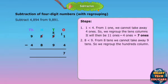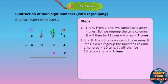8 is less than 9. From 8 tens, we cannot take away 9 tens. So we regroup the hundreds column. 1 hundred is equal to 10 tens. It will then be 18 tens minus 9 tens is equal to 9 tens.